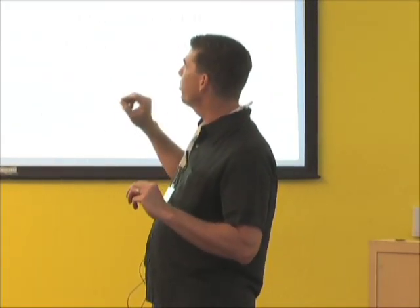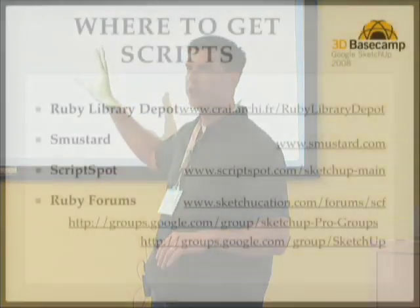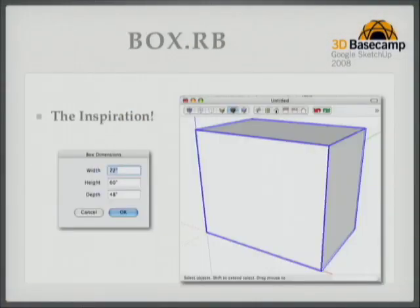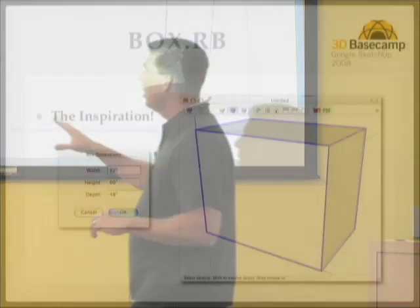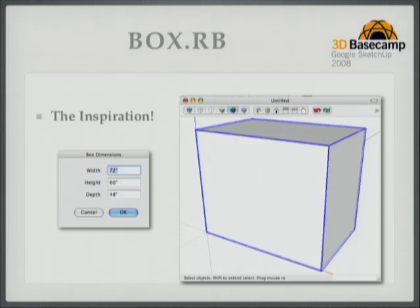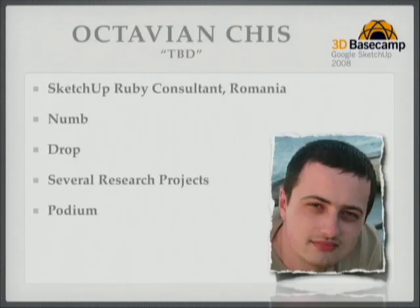There are several places to get scripts. This presentation will be made available, with hyperlinks for all the different places to get scripts. The first script I used to learn Ruby — still distributed with SketchUp today — was called Box.rb. It had a nice dialogue with text boxes and drop-downs, the most sophisticated user interface you could get at the time. You could put in dimensions and it drew a box. I extended it for the very first cabinet script I wrote for woodworking.